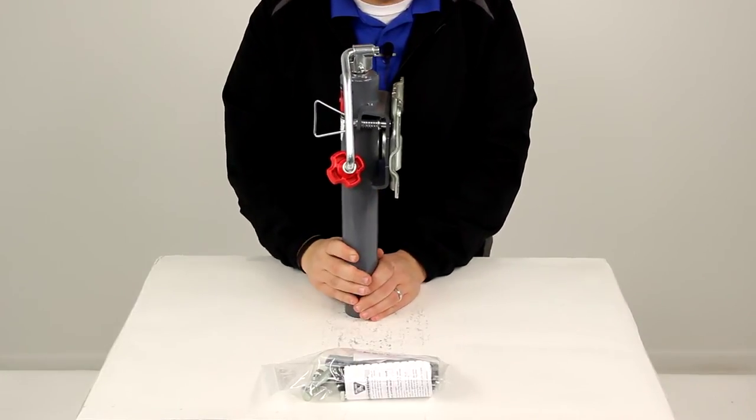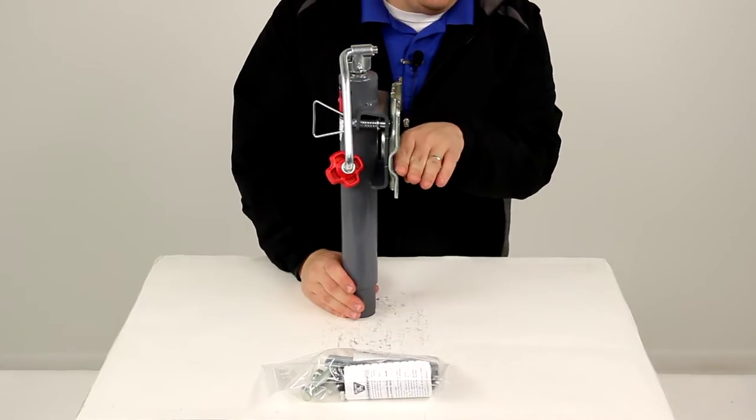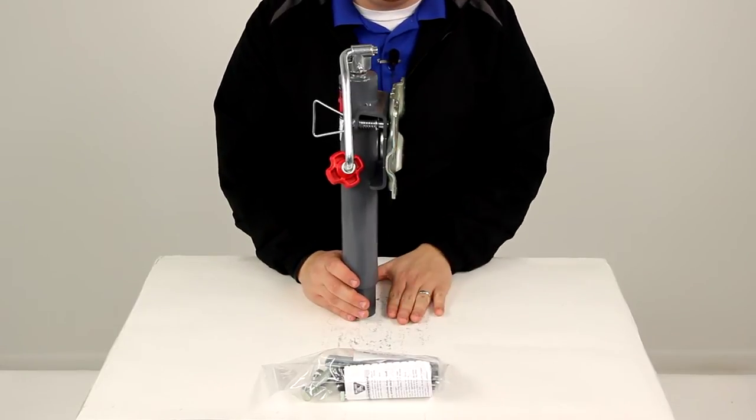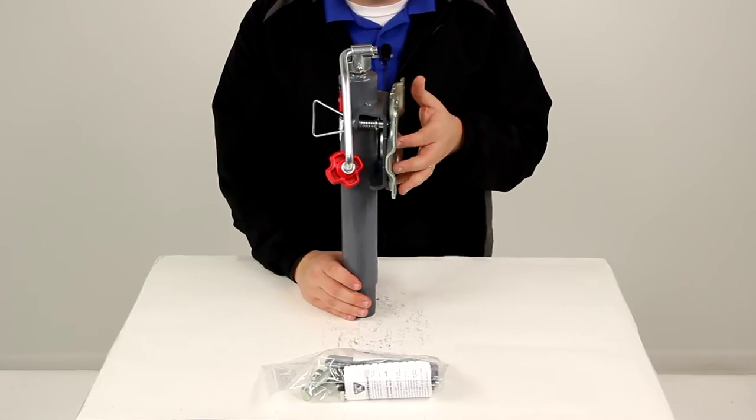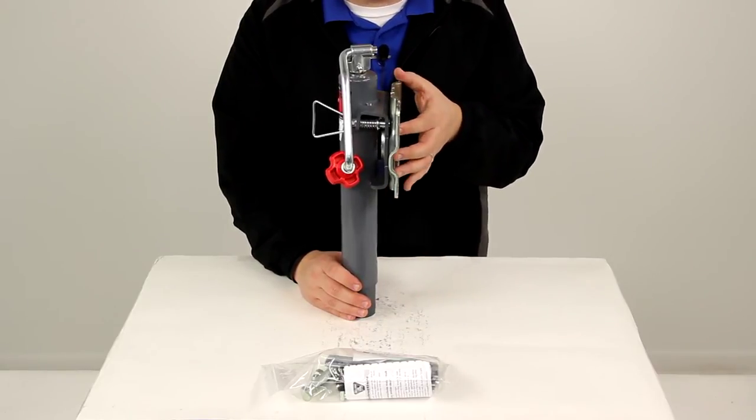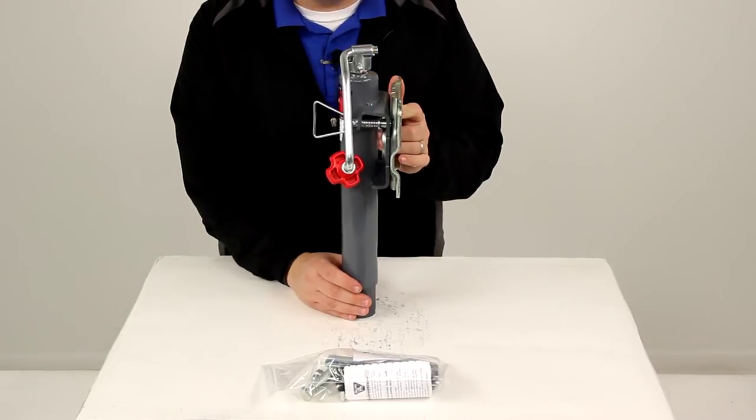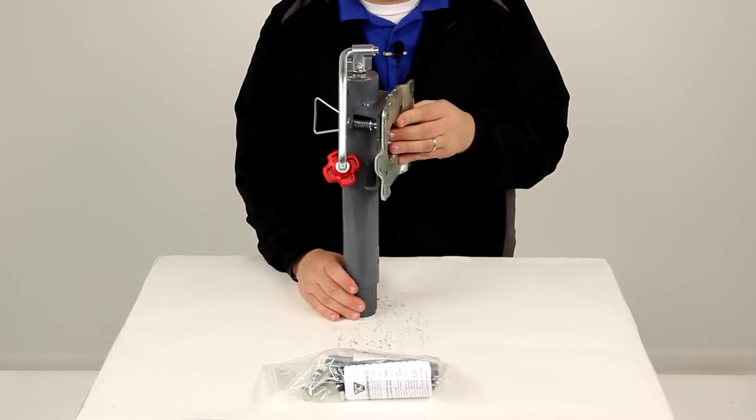When the jack is fully retracted, we have a bracket height of 11 inches. That's measuring from the center of the mounting bracket to the base or the bottom of the inner tube of our jack. When it's fully extended, that measurement is going to increase to 21 inches. If we subtract those measurements, we're left with 10 inches, and that's where we get our lift measurement from.